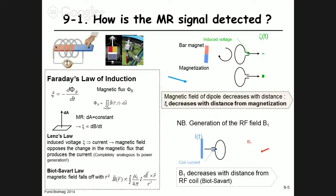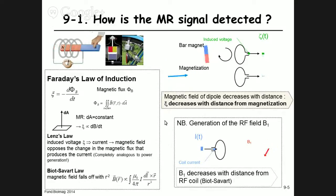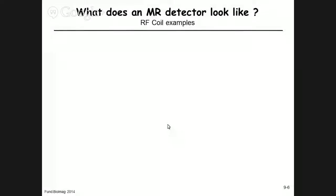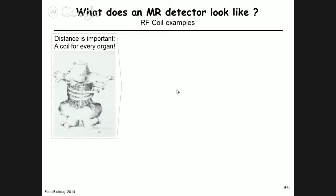The B1 field decreases with distance from the RF coil, whether for detection or excitation. So what does an MR detector look like? Since distance is critical, the key principle is: we have a dedicated coil for every organ. Ideally, a physicist would design an MR machine by squeezing the object into the coil to maximize signal. The physician says that's not patient-friendly, so a compromise must be found.